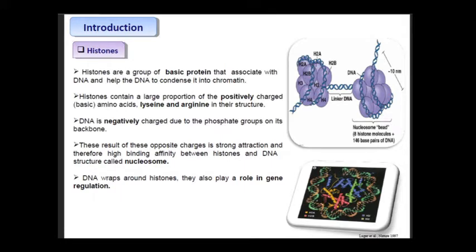Histones are a group of basic proteins—basic proteins meaning those which are rich in basic amino acids. Histones associate with DNA. DNA being negatively charged has a strong association or higher affinity for basic proteins or basic amino acids. So obviously histones, which are made up of basic proteins, readily interact with DNA. These histone proteins help DNA condense into a chromatin structure.